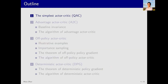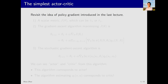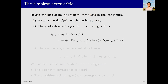Now let's look at the first part, which is about the simplest actor-critic algorithm. To understand this, we first need to revisit the policy gradient method we studied in the previous lecture. The actor-critic method is essentially a type of policy gradient method. The basic idea of policy gradient is as follows. First, we have an objective function, which can be the average value v-pi-bar or the average reward r-pi-bar. The second step is to optimize this objective function. We can use the simplest gradient method, gradient ascent: theta_{t+1} equals theta_t plus alpha times the gradient of J at theta_t.